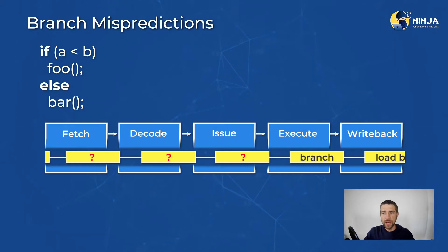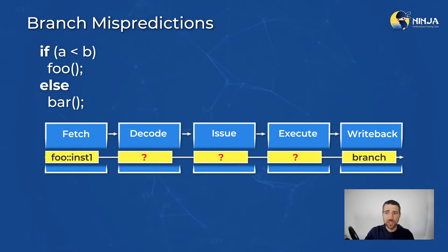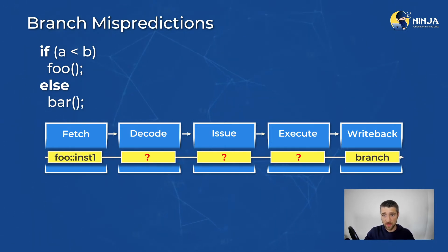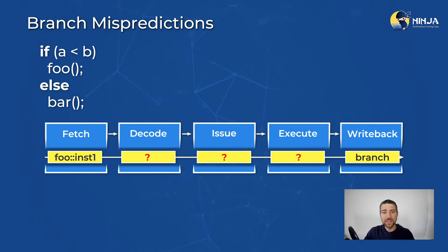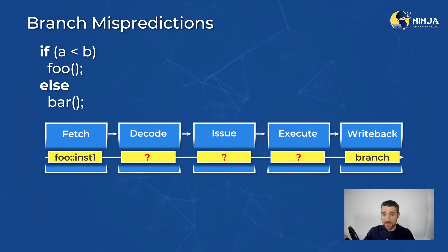Finally we find out it should have been foo, so we go ahead and start executing instructions from that function. But look — we wasted three cycles. It would be quite inefficient to waste three cycles on every single branch. So in order to speed things up, we can try to guess which function will be called. And in fact, this is what modern processors do, and this is called speculative execution.